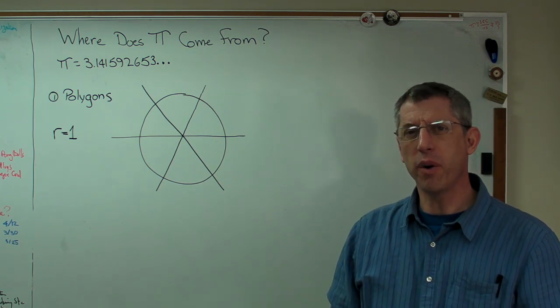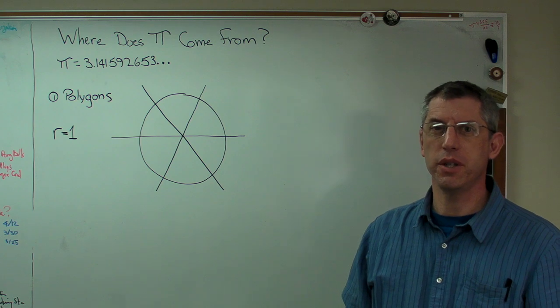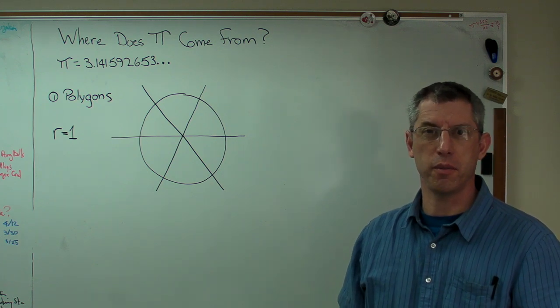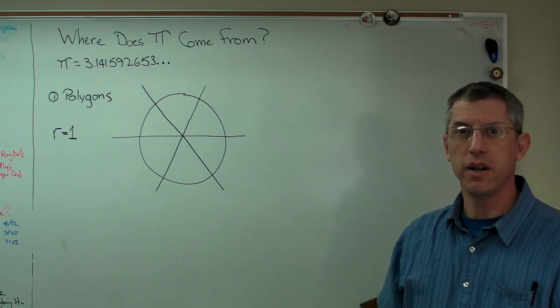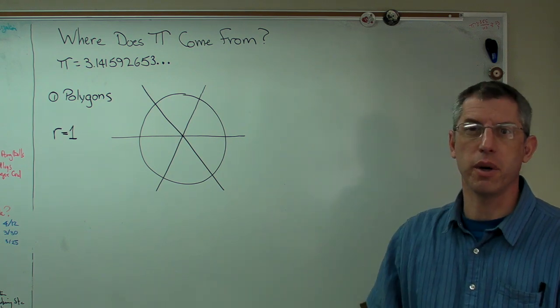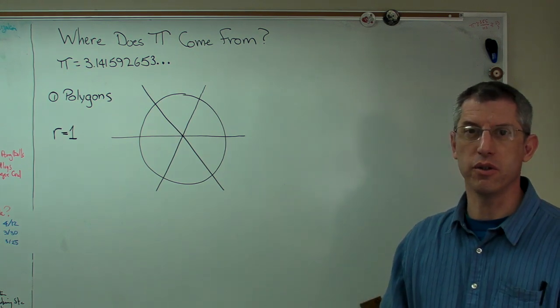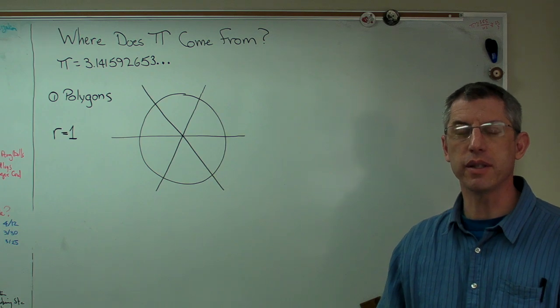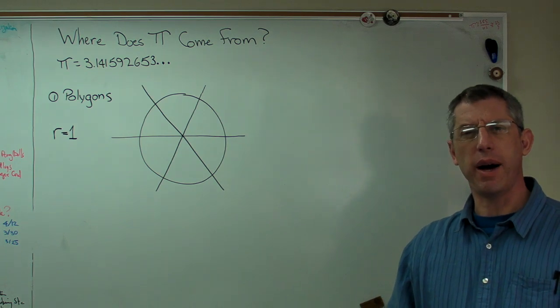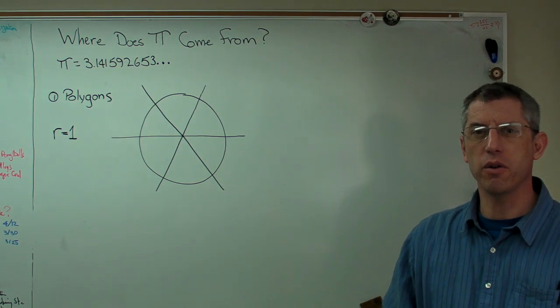You ever wonder where that number actually comes from? You know, you punch it into your calculator. A lot of calculators have a pi button, and you can get this number to whatever precision you need. Or you can go on the Internet on my computer there, and you can get it to millions or even now trillions of decimal places. But where does this come from? How do we actually know that's the value of pi?